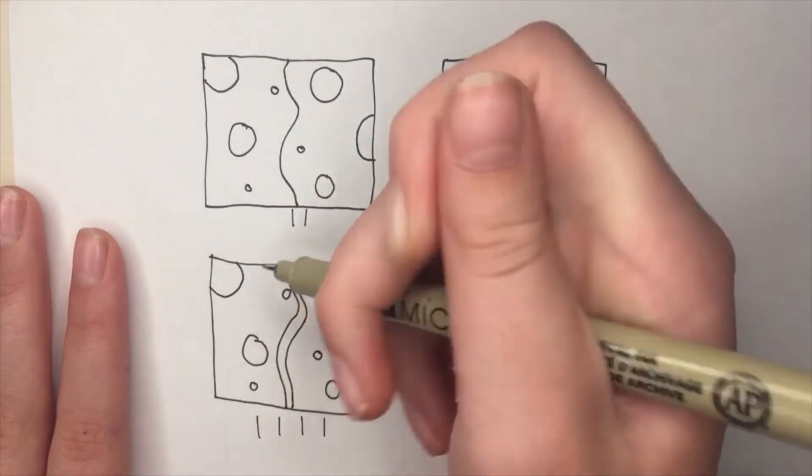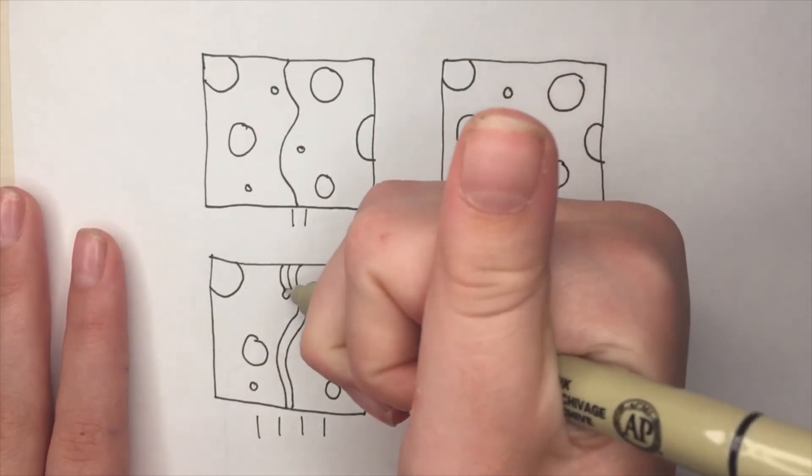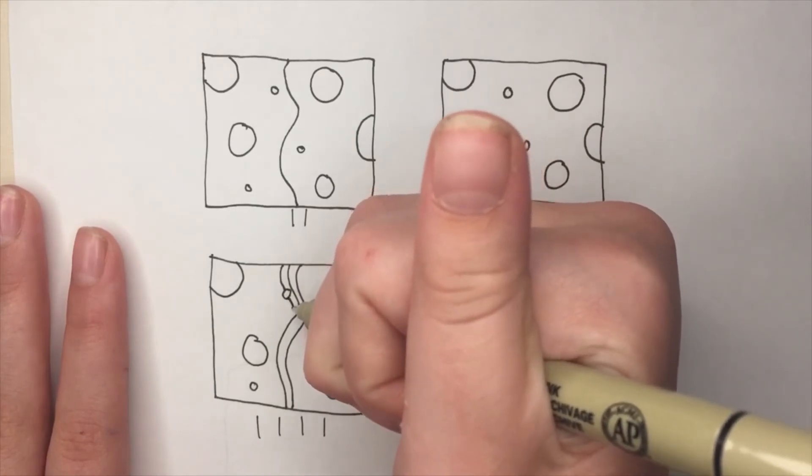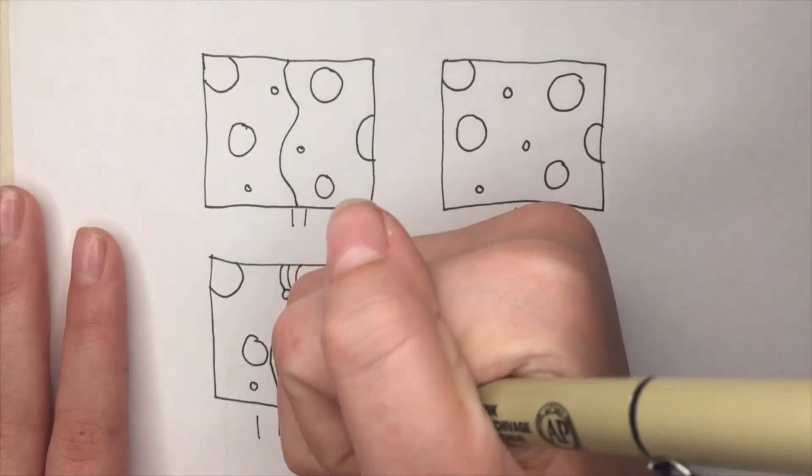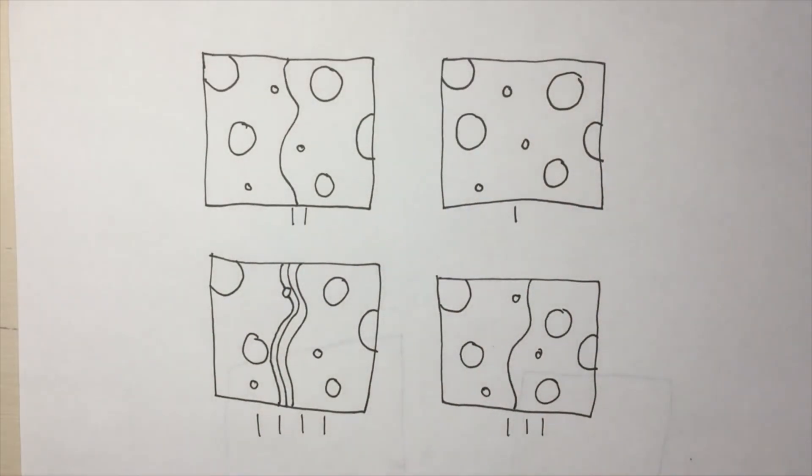And when I come to a circle, I'm going to make a squiggly line to the circle. And then pretend like the squiggly line is going through the circle. Like that. I'll come back when I have squiggly lines in all of my boxes.